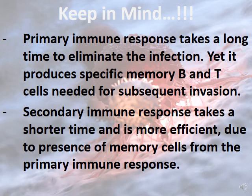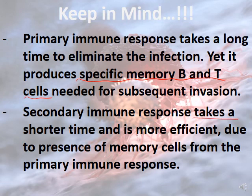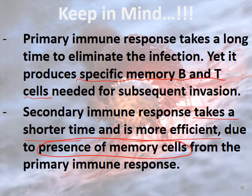The primary immune response takes a long time to eliminate the infection, but it produces specific memory B and T cells. These memory cells are used in the secondary immune response — they act like a reservoir of B and T cells ready to attack the pathogen — making the secondary response faster, more efficient, and protective for a longer duration.